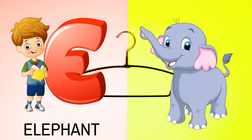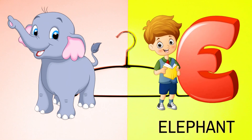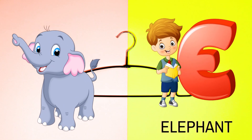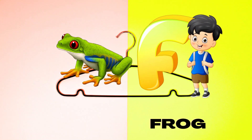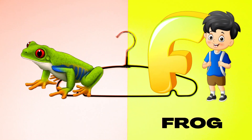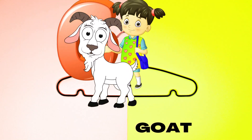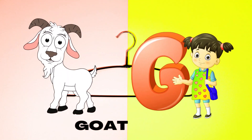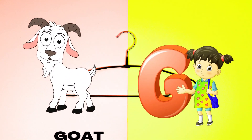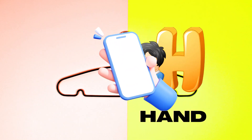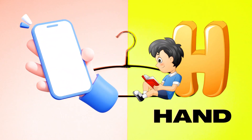E is for Elephant, E-E-Elephant. F is for Frog, F-F-Frog. G is for Goat, G-G-Goat. H is for Hand, H-H-Hand.